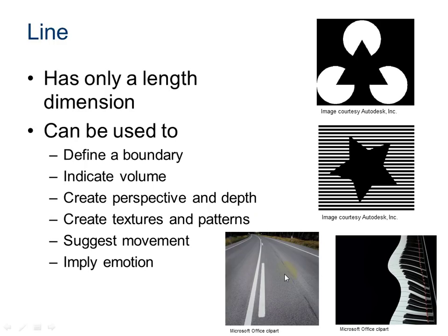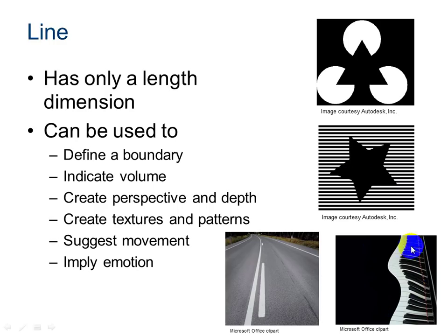It can create textures and patterns, as we notice here with the star. You can see the horizontal lines back here that are making the star appear to pop out at you. And it can also suggest movement or imply emotion. For example, the keyboard here — the way we've used the wavy, curvy line on the edge of the keys makes it look like the piano keys are waving.